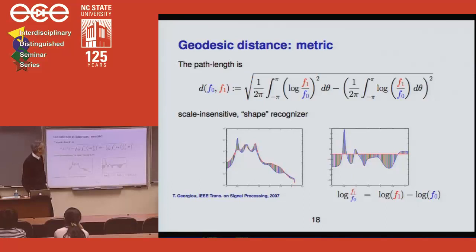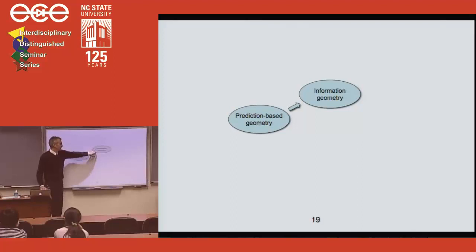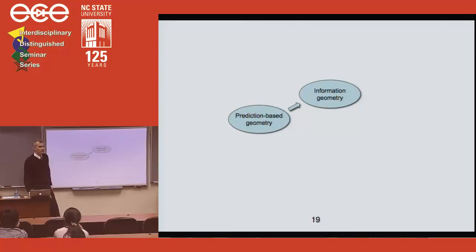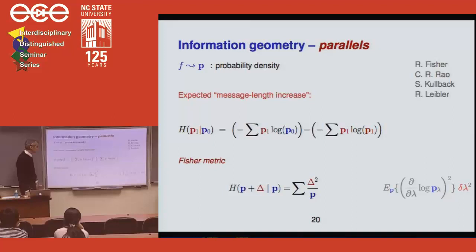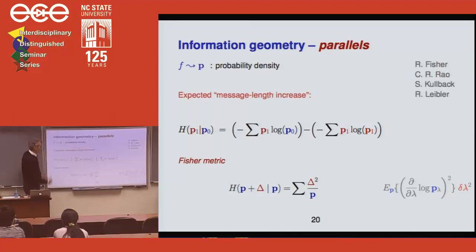I'd like to discuss information geometry, a subject with a 60–70 year history going back to the work of Rao and Fisher, and more recently developed in depth by Amari. It started with Fisher; Rao recognized the significance of metrizing probability spaces. Then Kullback-Leibler, in the context of hypothesis testing, introduced the Kullback-Leibler distance, which is very analogous to what we discussed before.